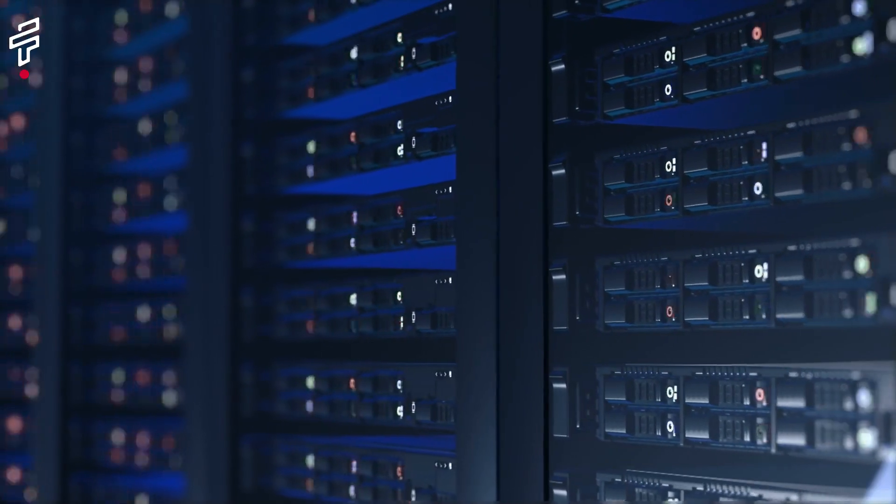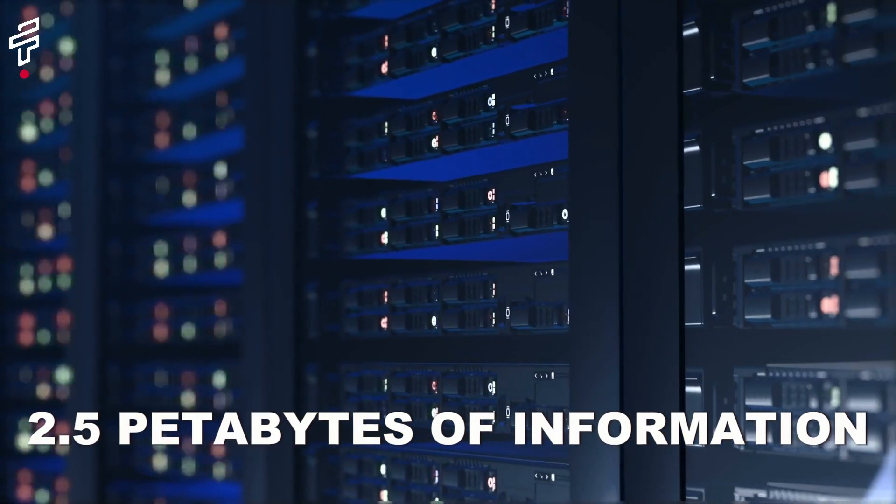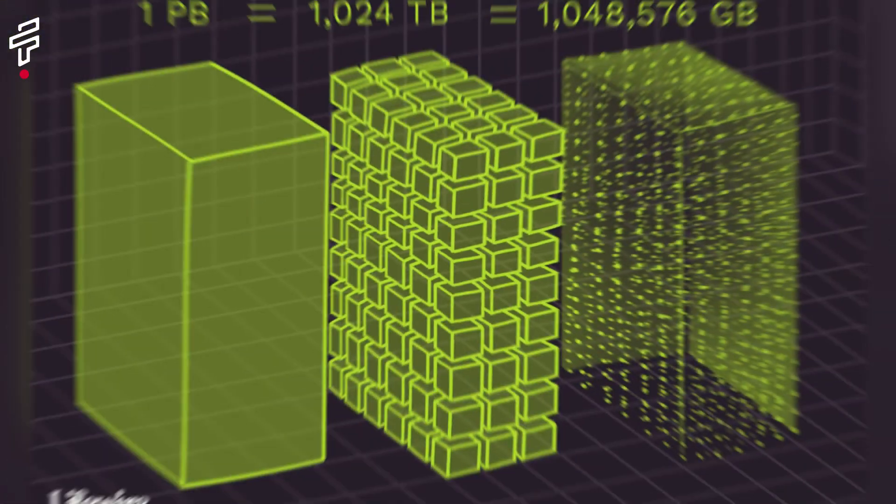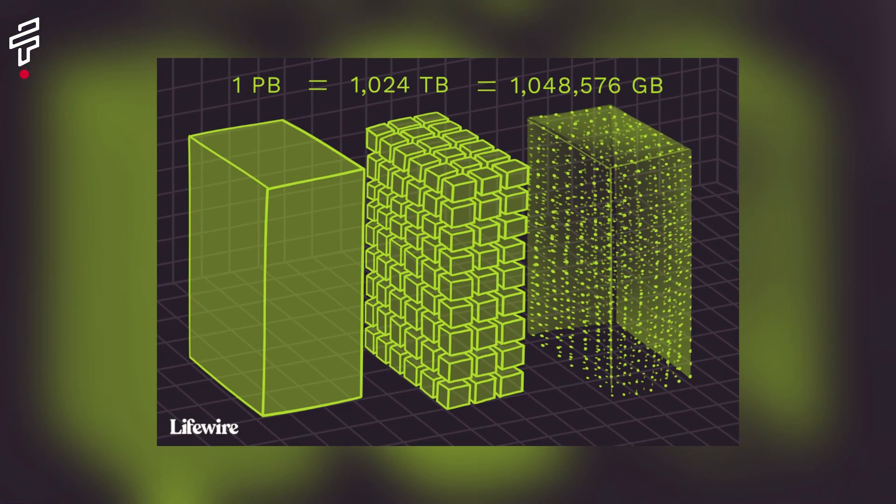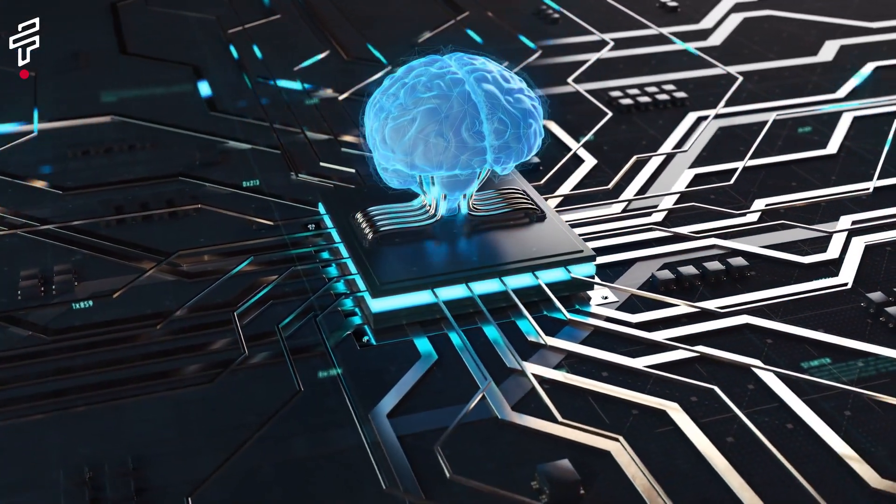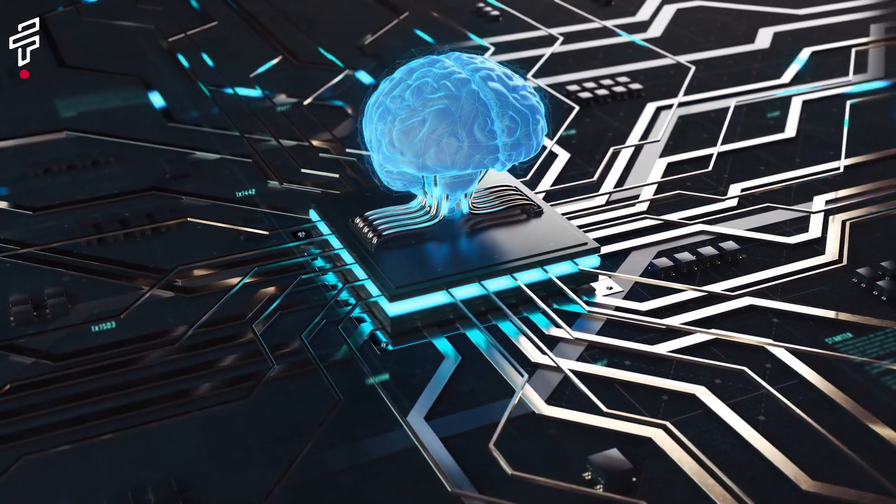Fact number three, the brain can store up to 2.5 petabytes of information, which is equivalent to every book that has ever been written. A petabyte is a unit of data equal to 1000 terabytes. This means that the average human brain can store more information than any computer in the world.